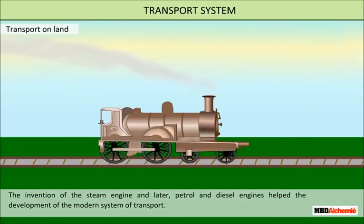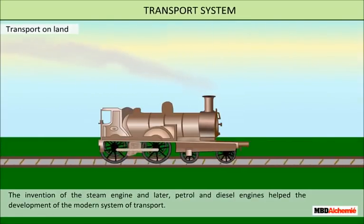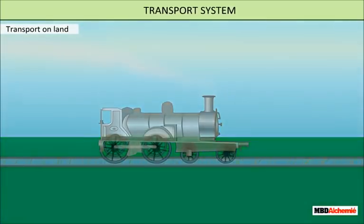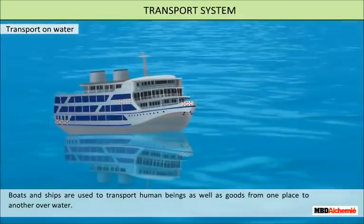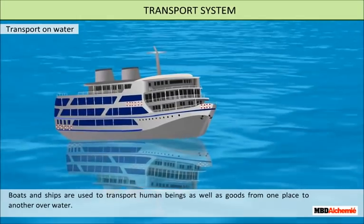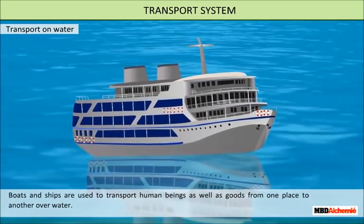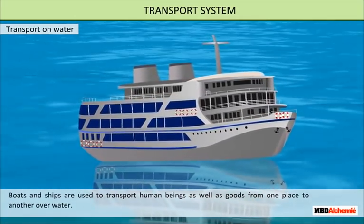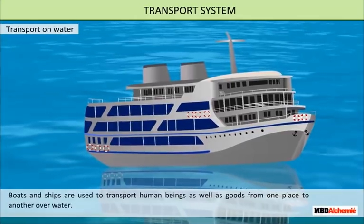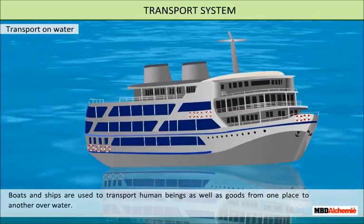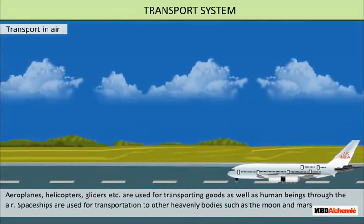Later, petrol and diesel engines helped the development of the modern system of transport. For transport on water, boats and ships are used to transport human beings as well as goods from one place to another.